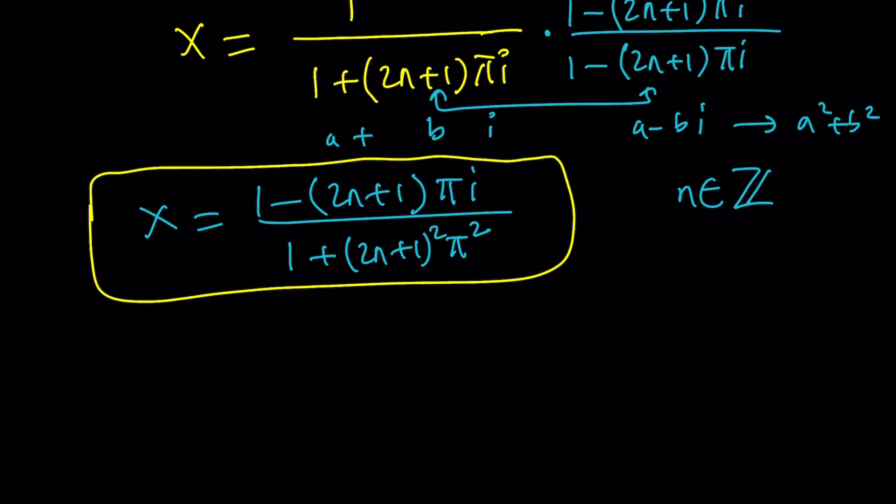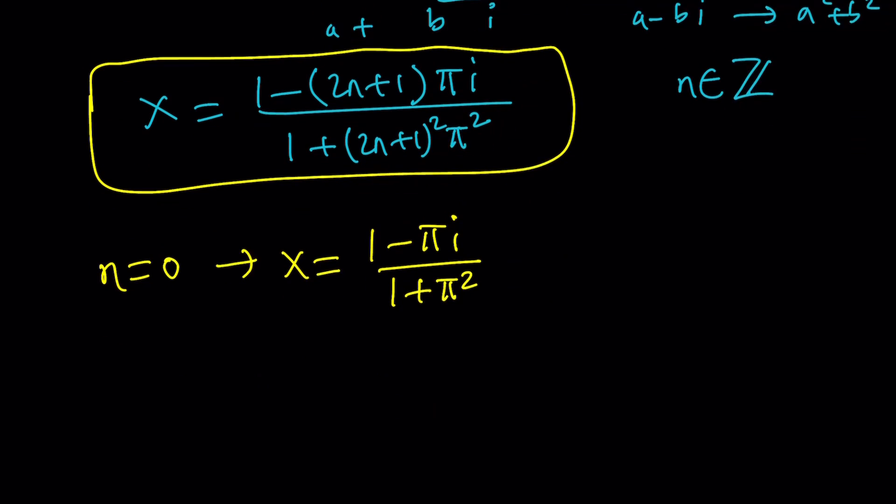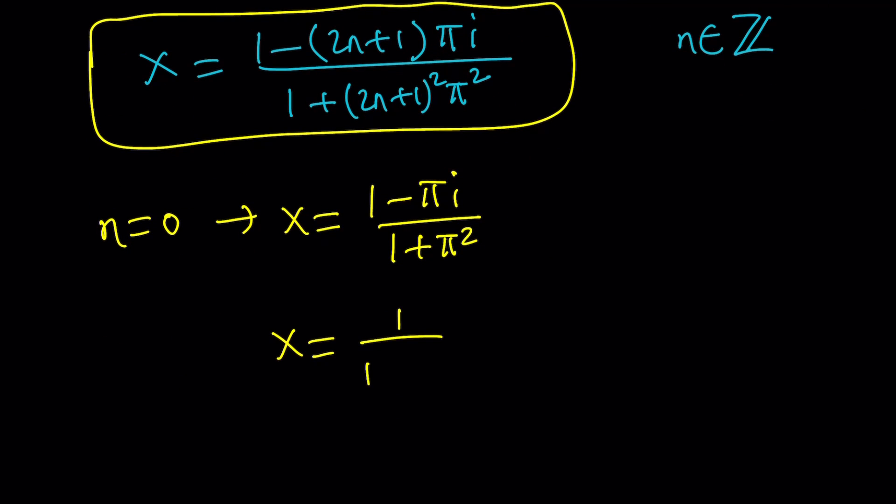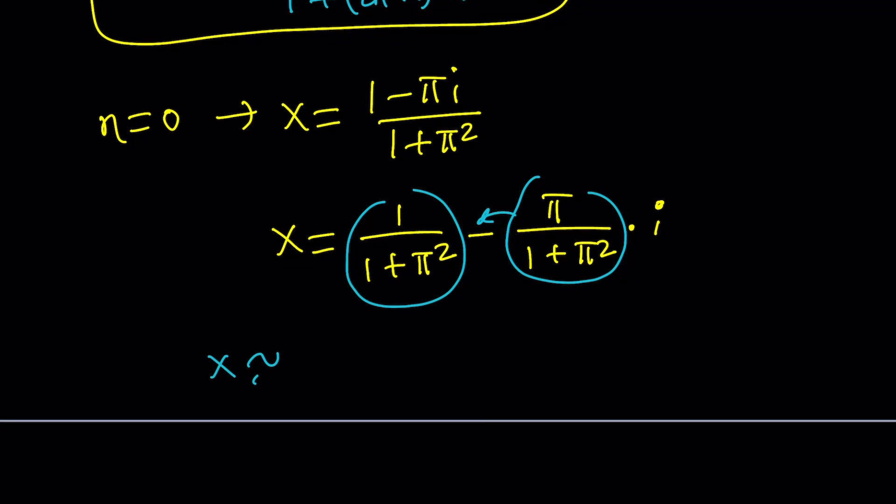So let's go ahead and replace n with 0. From here we get x equals 1 minus pi i over 1 plus pi squared. And obviously now we can easily split it up into the real part plus the imaginary part. And the imaginary part is going to be negative pi over 1 plus pi squared and that'll be multiplied by i. So this is the real part and this is the imaginary part.